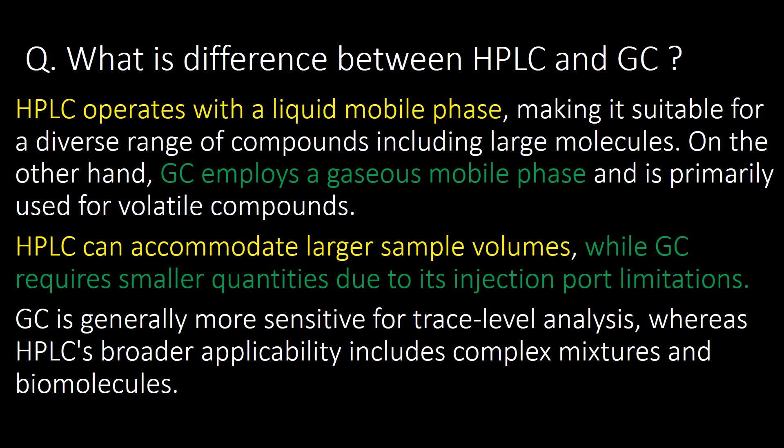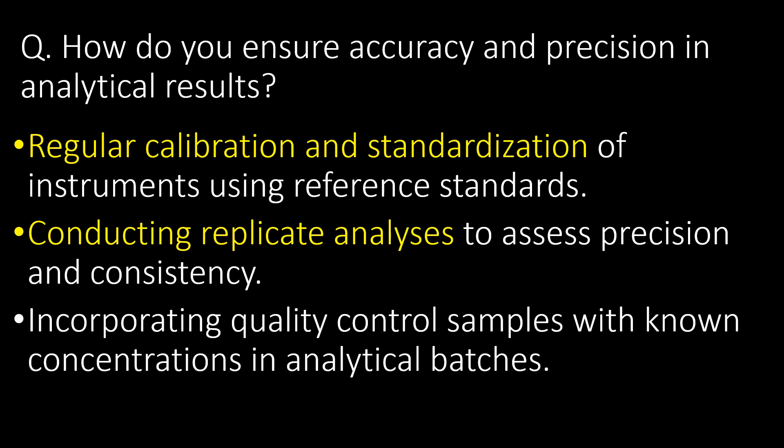What is the difference between HPLC and GC? HPLC operates with a liquid mobile phase, making it suitable for a diverse range of compounds including large molecules. GC employs a gaseous mobile phase and is primarily used for volatile compounds. HPLC can accommodate larger sample volumes while GC requires smaller quantities due to its injection port limitations. GC is generally more sensitive for trace level analysis, whereas HPLC's broader applicability includes complex mixtures and biomolecules.